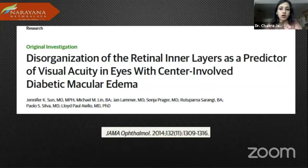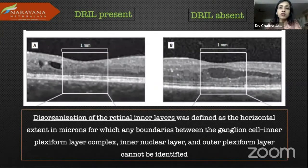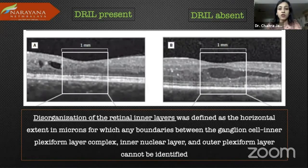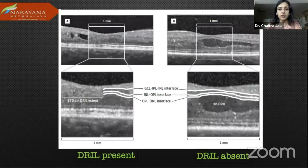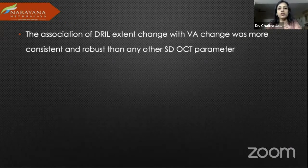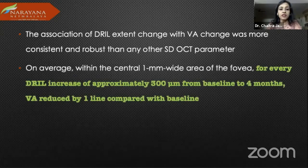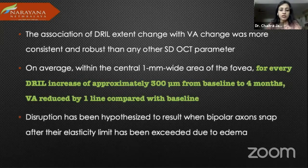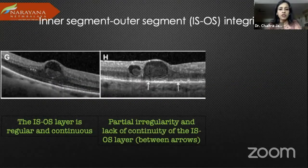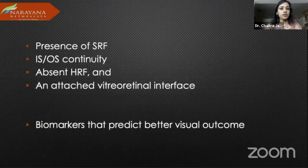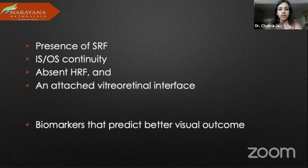DRIL — disorganization of retinal inner layers — is defined as the horizontal extent in microns for which any boundary between the ganglion cell/inner plexiform layer complex and the inner nuclear layer and outer plexiform layers cannot be identified on a clear scan. The association of DRIL has a bearing on visual acuity, and for every DRIL increase of approximately 300 microns from baseline, there was a reduction in visual acuity by one line. Disruption has been attributed to a snap in the bipolar axons. Regarding IS/OS continuity — regular versus continuous, irregularity, and discontinuity — presence of SRF, IS/OS continuity, absent HRFs, and an attached vitreoretinal interface are biomarkers that predict better visual outcome.